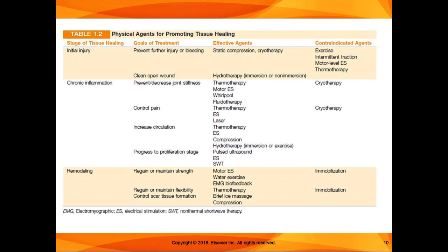The tables in this book are excellent. Table 1.2 talks about how you use physical agents to promote tissue healing. It's organized by the stage of tissue healing — initial injury, chronic, or remodeling stage — and lists the goals of treatment, which physical agents can be effective, and which are contraindicated. For initial injury, we want to prevent further injury or bleeding, and for open wounds, hydrotherapy — either immersion or non-immersion — can be used to clean the wound.